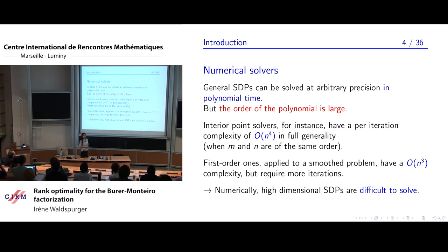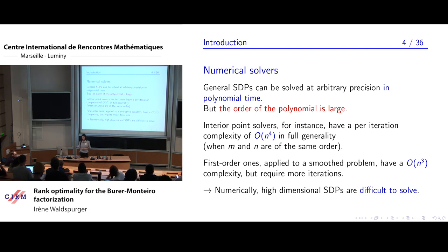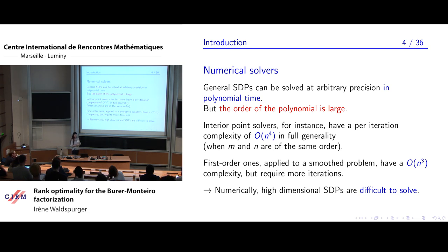There has been a lot of research into algorithms for solving semidefinite problems. Several SDP solvers work in polynomial time: given a fixed precision, you can solve an SDP in polynomial time depending on the precision. However, these solvers, although polynomial, tend to be slow because the degree of the polynomial is large. For instance, with interior point solvers, the per-iteration complexity is of the order N^4 where N is the size of the unknown matrix, which makes very large N impractical. Other algorithms suffer from more or less the same drawback.